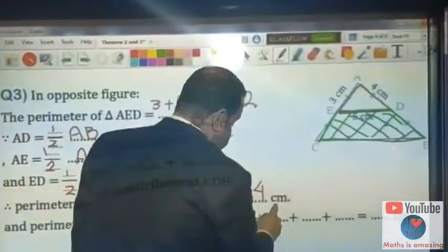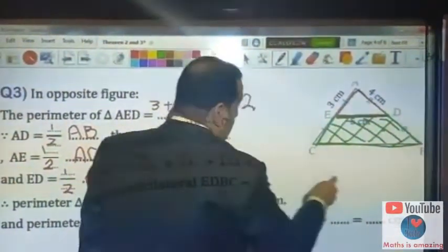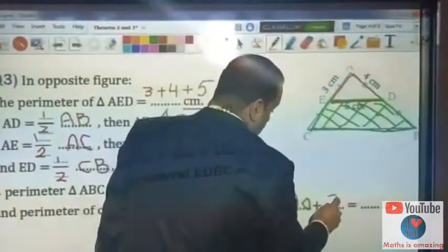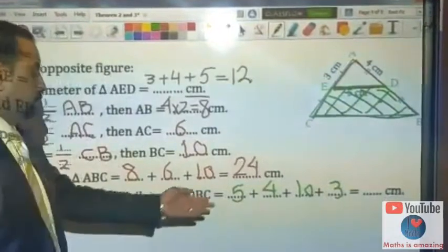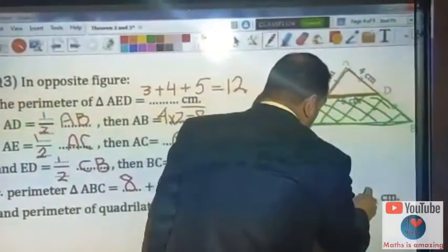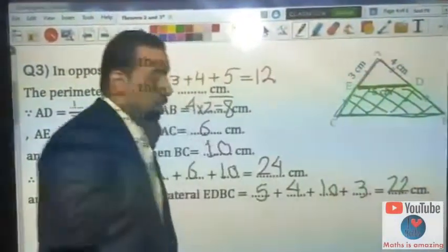DB is 4, BC is 10, and CE. The sum is 4 plus 3 plus 10 plus 3 equals 20.